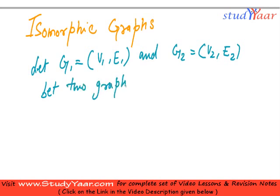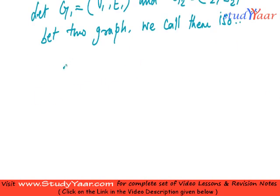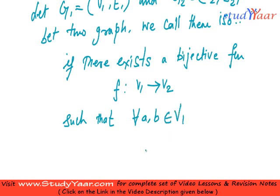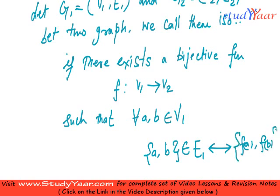We call them isomorphic if there exists a bijective function, bijective means one to one and onto. If there exists a bijective function from V1 to V2 such that for all a, b belonging to V1, if a, b is an edge in E1, then it implies and is implied by FA, FB is an edge in E2.